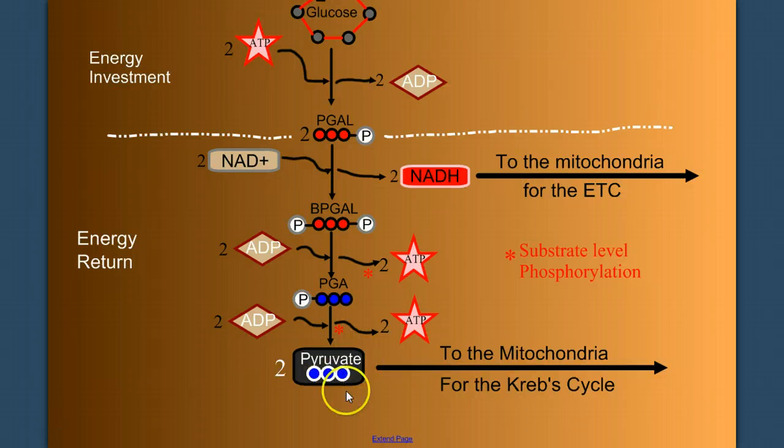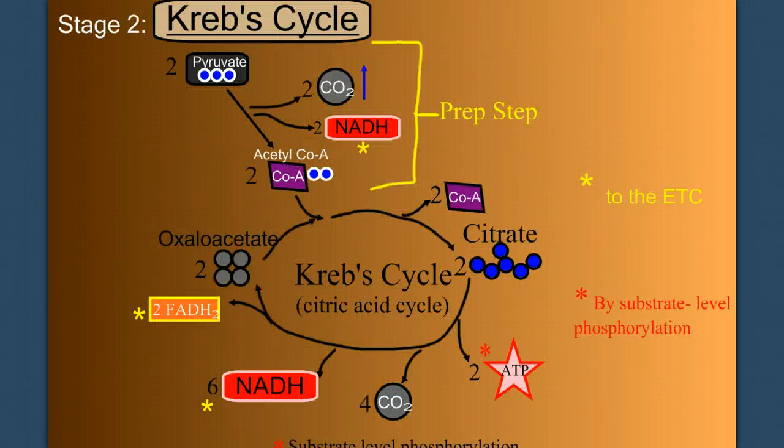At the end of glycolysis, we took these two pyruvates through the Krebs cycle. During the Krebs cycle, we prepared pyruvate in the prep step, liberating two carbon dioxide as waste products, making two more NADH that will go to electron transport. Acetyl-CoA was picked up by oxaloacetate to form citrate, and then, continuing through a series of intermediates, the citric acid cycle produced two ATP, liberated four carbon dioxides, made six NADH and two FADH2, all of which are going to the electron transport chain.